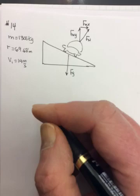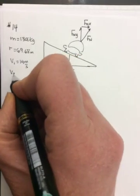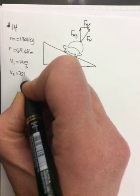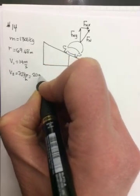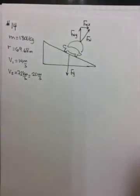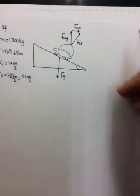14 meters per second. And it wants to know what must be the force of friction acting on the car to keep it in the curve if it wants to travel at 72 kilometers per hour. So V2 is 72 kilometers per hour, which is really 20 meters per second. So the first part is to find out what is the angle that it's banked at.